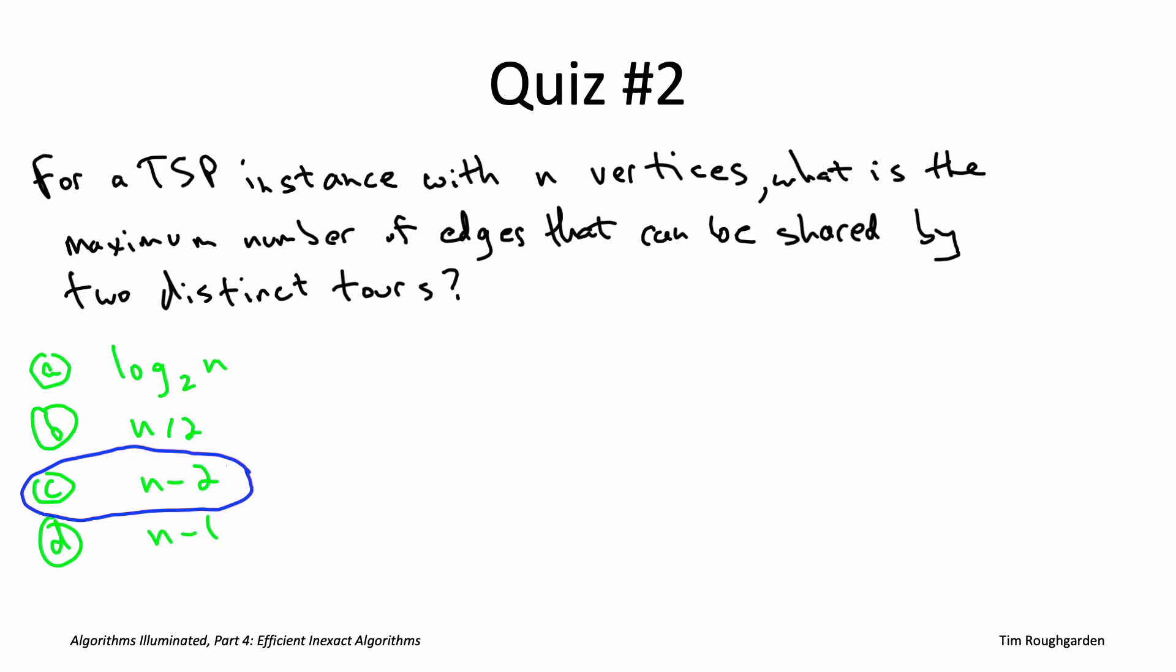Let's see an example on a five vertex instance. On one hand, you could imagine a five cycle - going around the perimeter of our example in the previous quiz. Or you could have this light blue tour, which uses three edges on the outer perimeter and two internal crossing edges. That would be two different tours, both with five vertices, with three edges in common. And that's the most you can have.